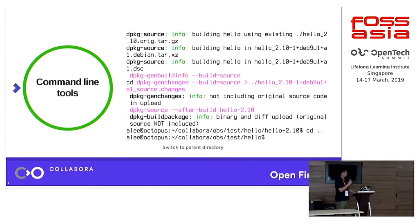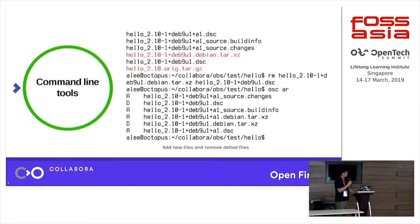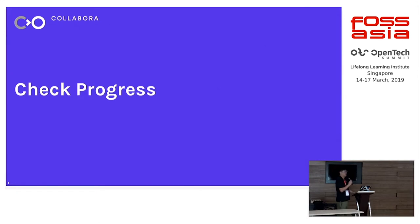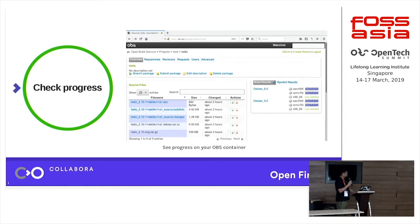After running that command the source package is generated. Go to the parent directory — you can see the new version of the source package. Remove the old one and use 'osc ar' (add and remove) so the old version gets deleted and the new version gets added. Then use 'osc ci' (check in) with a commit message — this sends a commit to the OBS server. Go back to the web page, reload it, and you can see the new version is there with the source package starting to process and generate binary packages. Once complete it shows green 'succeeded', and clicking on it shows the full build log.